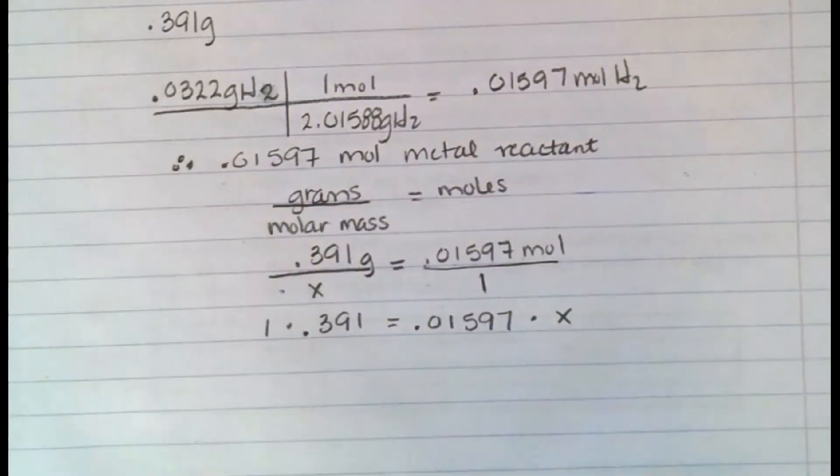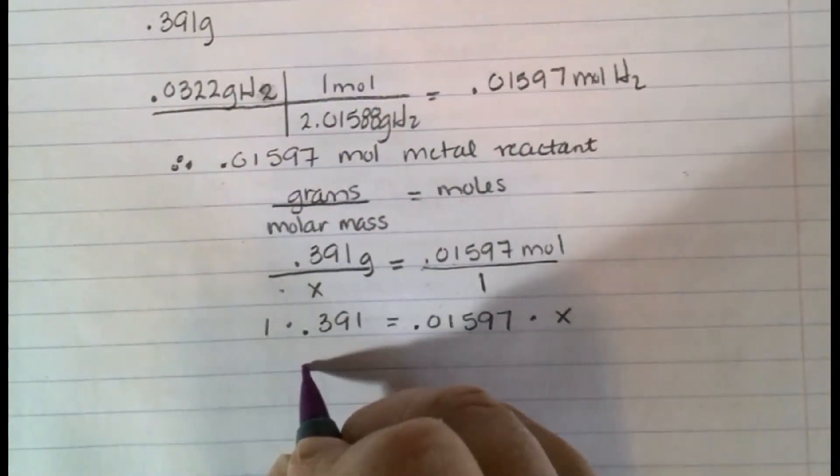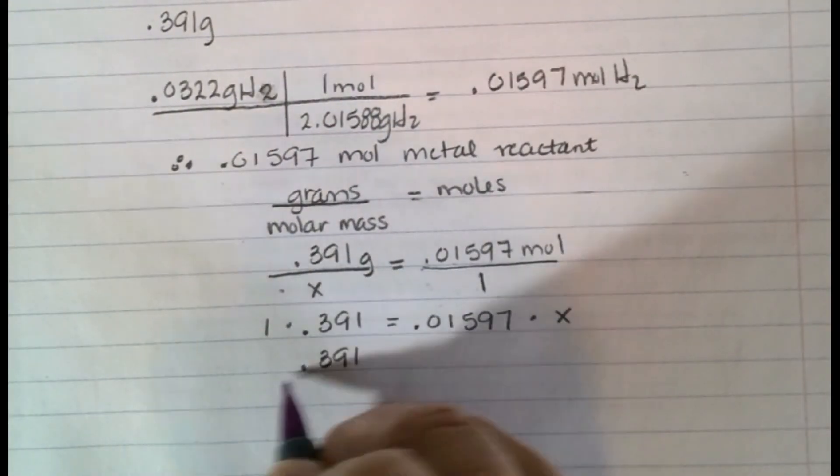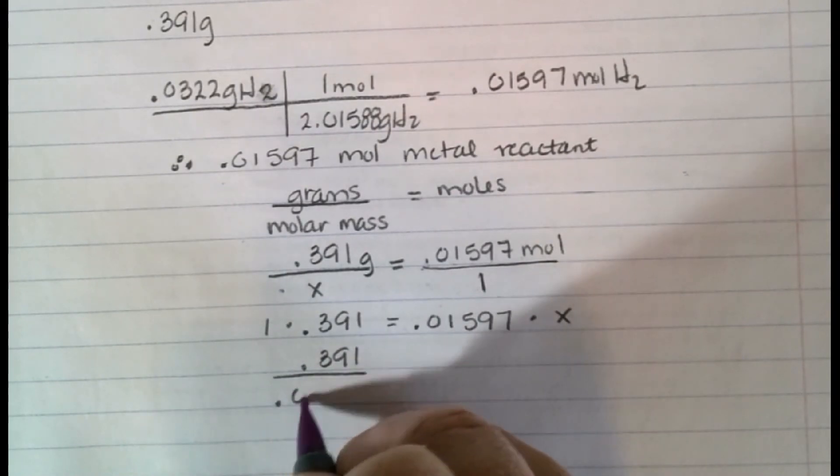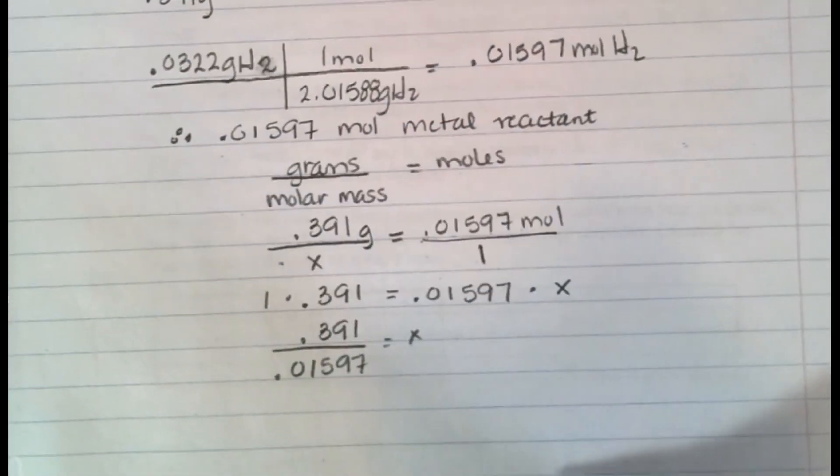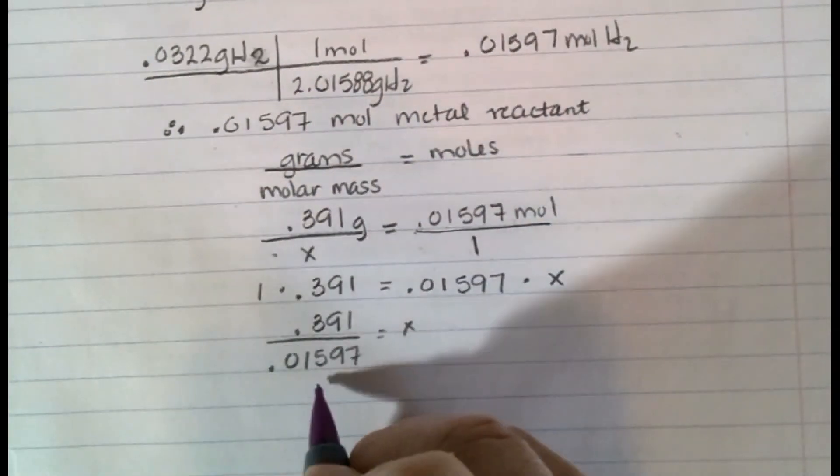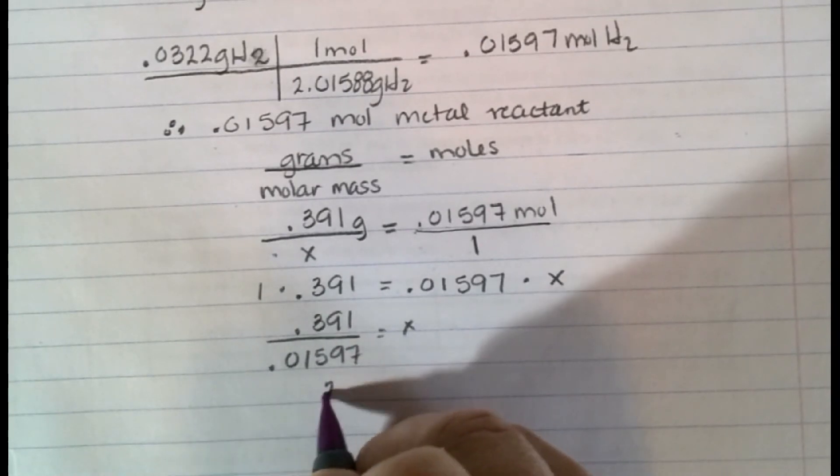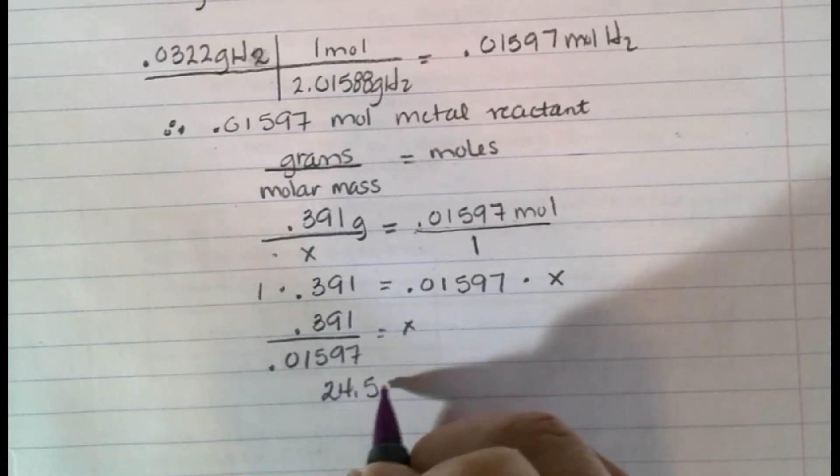And then I'm going to continue mathing it, and I'm going to get 0.391 divided by 0.01597. Plug that into my calculator and I end up with x equaling 24.5.